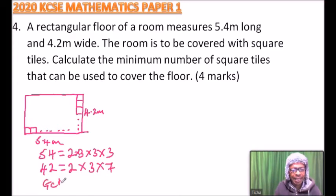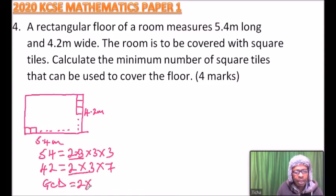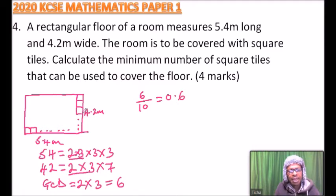To get the GCD, we find what is common. 2 × 3 is common for both, which gives us 6. Because we multiplied the numbers by 10, we divide 6 by 10 to get 0.6. This is the greatest common divisor of 4.2 and 5.4.